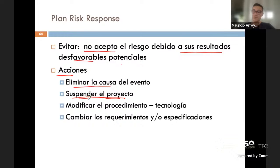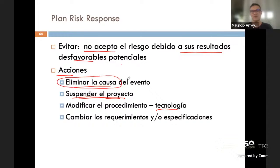Si hago alguna de esas acciones de mitigación, ese riesgo puede pasar abajo y salir del top 10 de prioridades porque implementé las salvaguardas. Fui e implementé las salvaguardas con objetivos de control específicos para mitigar la posibilidad de que el evento incierto de un ransomware me llegue. Esto hace entonces que muchas veces uno termine haciendo un plan de mitigación, con acciones puntuales.